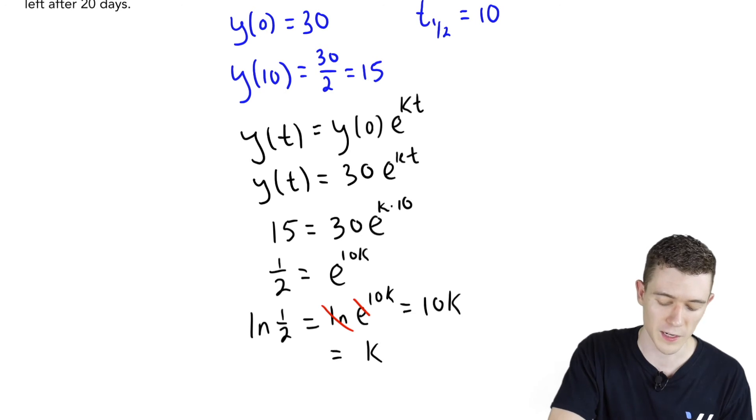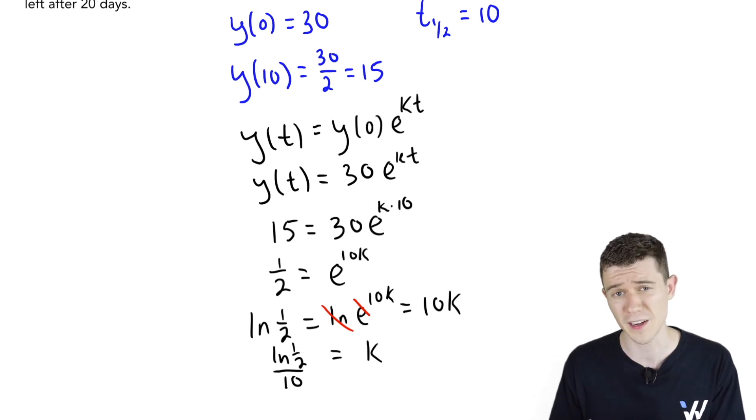Finally, divide both sides by 10. Natural log of a half over 10. This is k. This is our proportionality constant.